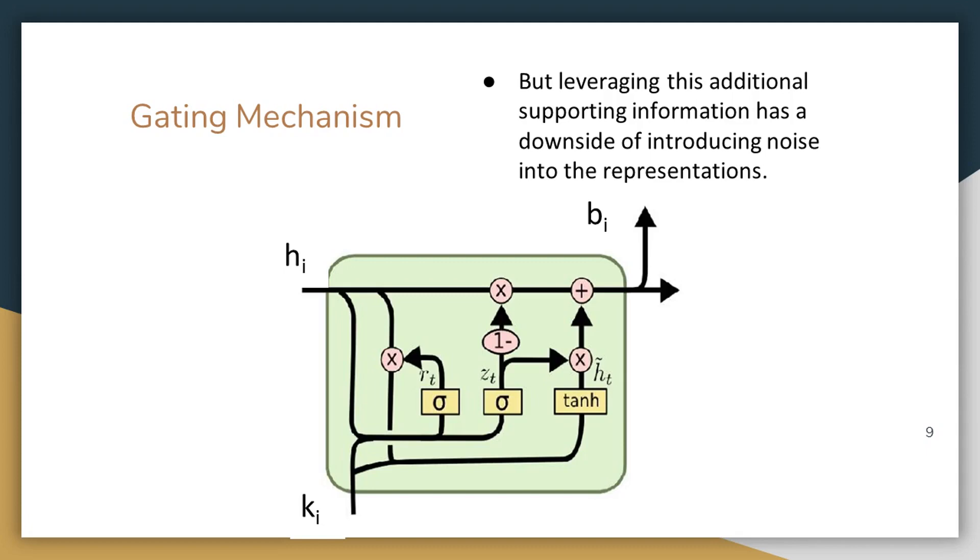We pass the information h_i which we obtained from hidden state representation from LSTM and k_i which we obtained from document level representation into a gating mechanism to obtain b_i which is a balance between both the representations.